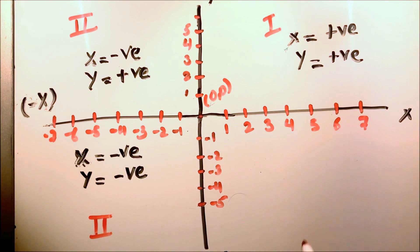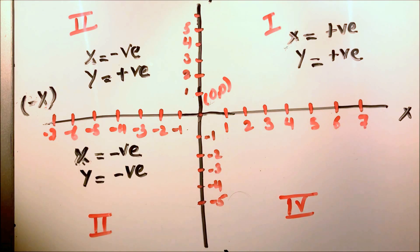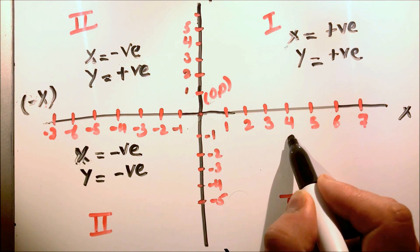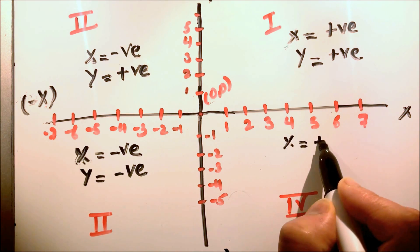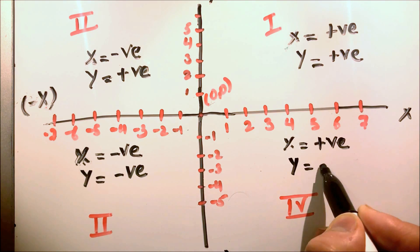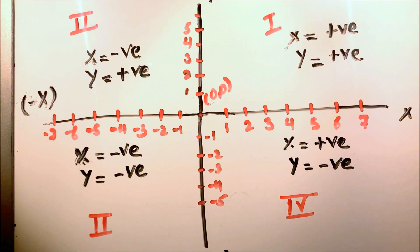Now, this is the fourth quadrant. In the fourth quadrant, x is positive as we are going on the right-hand side, while y is negative as we are going down. This is how the abscissa and ordinate signs change when we move from one quadrant to another or when we locate a point on different quadrants of the coordinate plane.